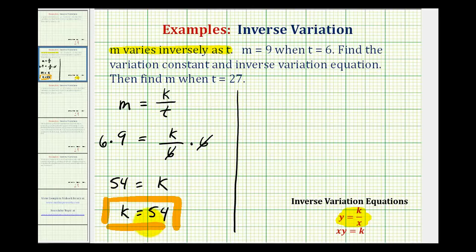And now for our inverse variation equation, we'll substitute 54 for k into this equation here. So we know m is equal to 54 divided by t. So again, this is our inverse variation equation.